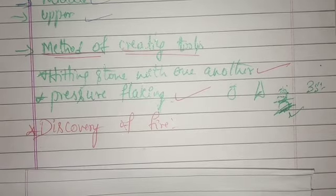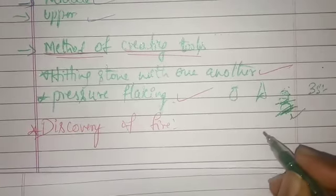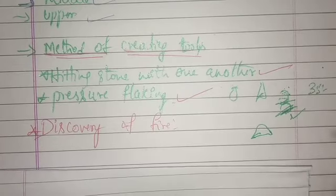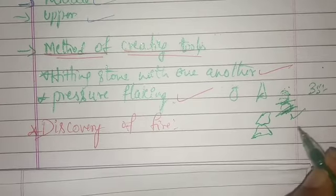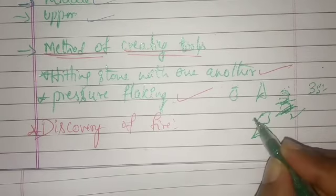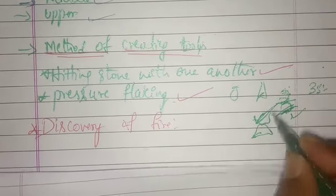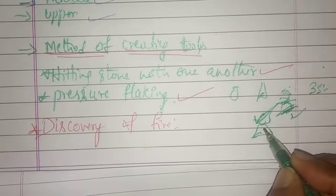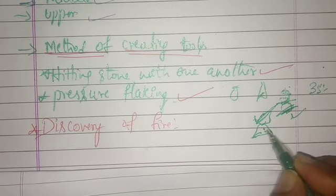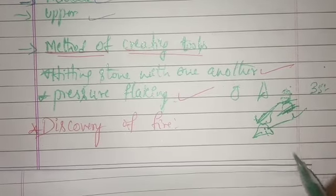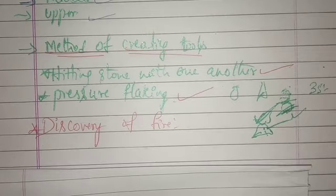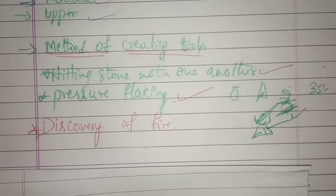In pressure flaking, unlike the first method, they used two stones placed together and then used a third stone. They kept one stone at a certain place, placed a second stone on top of it, and then with the help of the third stone, they hit the second stone so that the impact would shape the lower first stone. In total, three stones were used.